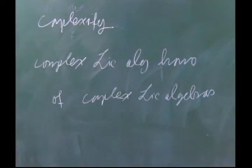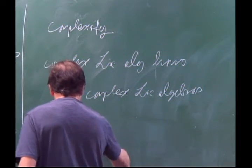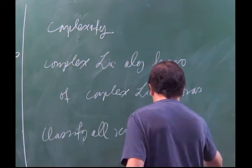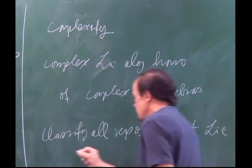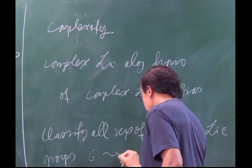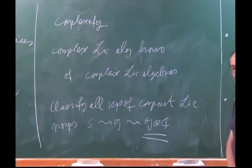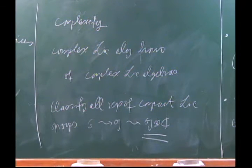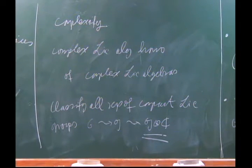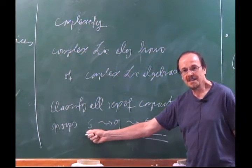Representations of Lie groups reduce to linear algebra of representations of Lie algebras. One complexifies and studies complex Lie algebra homomorphisms of complex Lie algebras. The goal is to classify all representations of complex Lie algebras, involving weights of representations and understanding the structure in terms of weights and Dynkin diagrams. This is a linear algebra story that's quite involved — most of the time in part two is spent here.